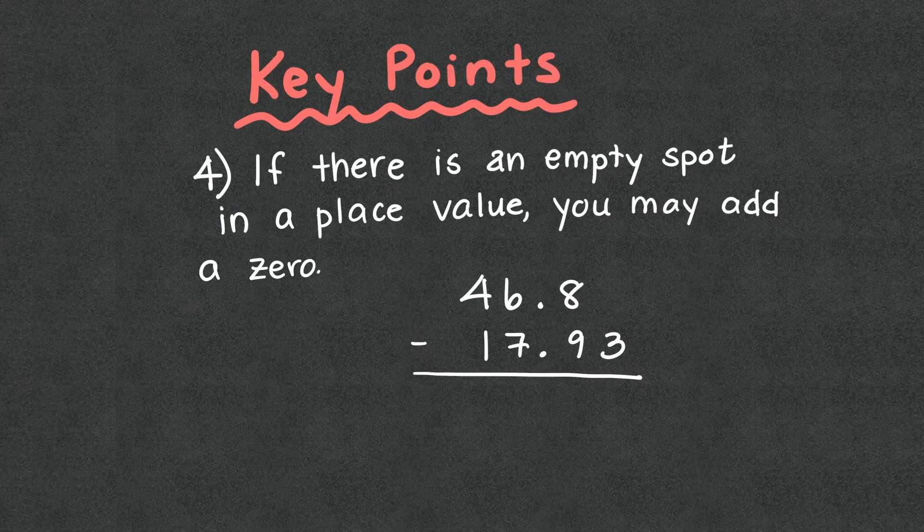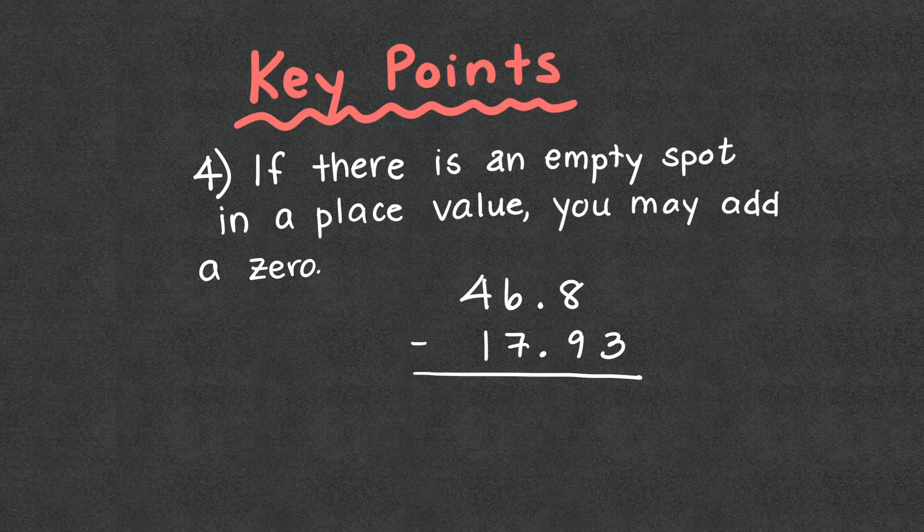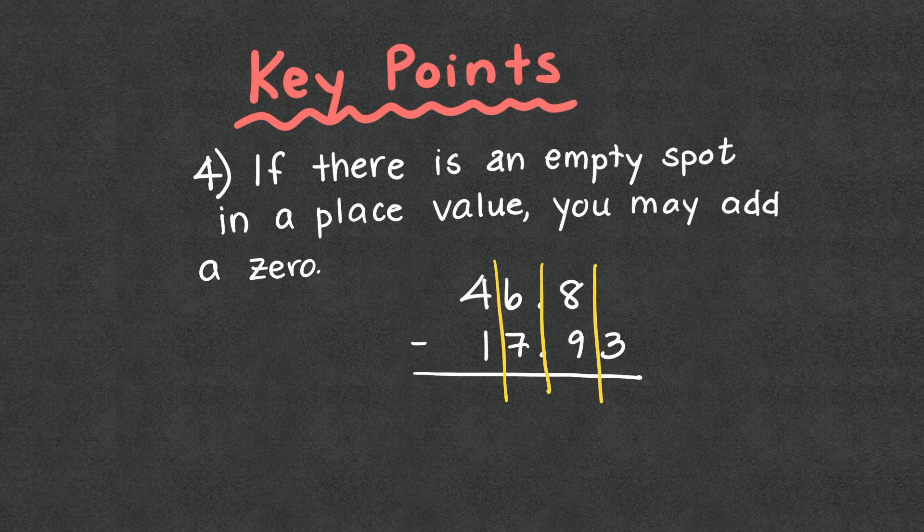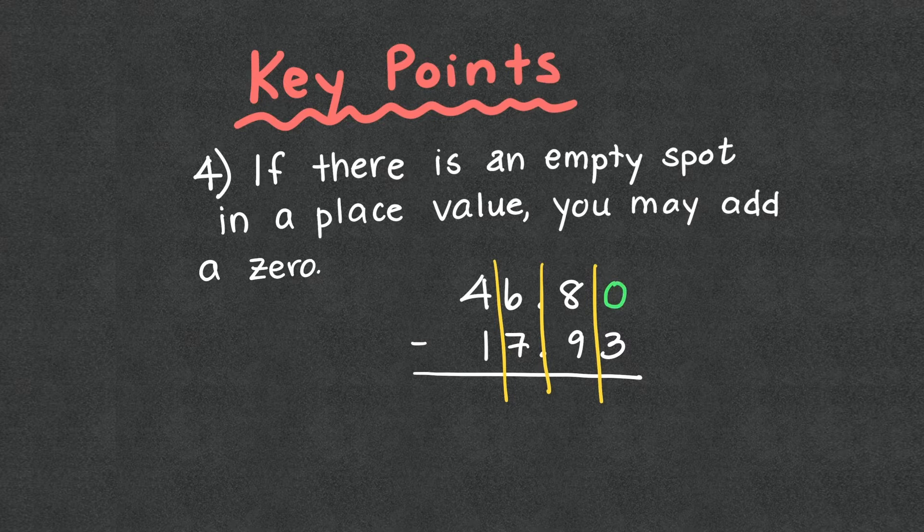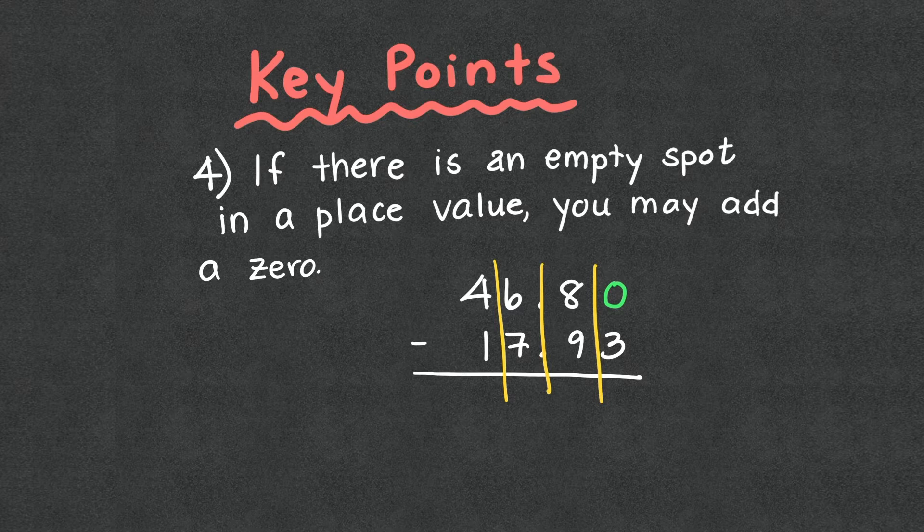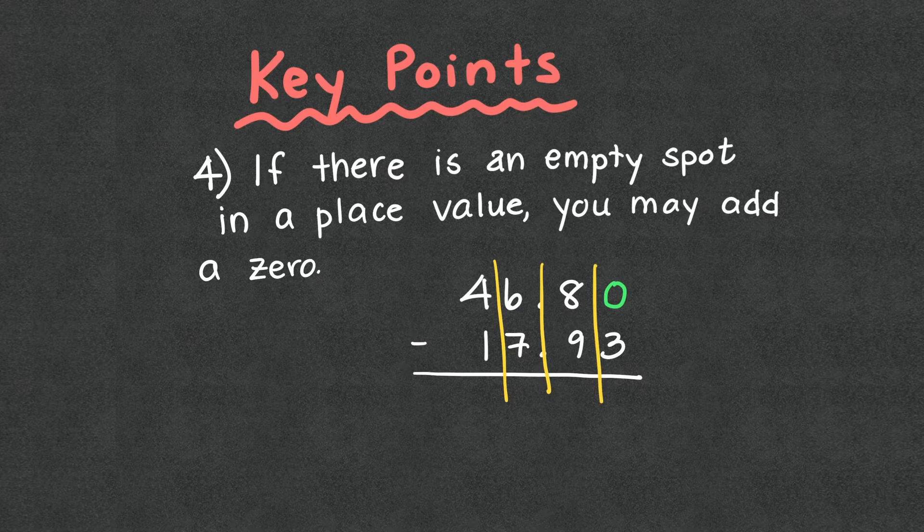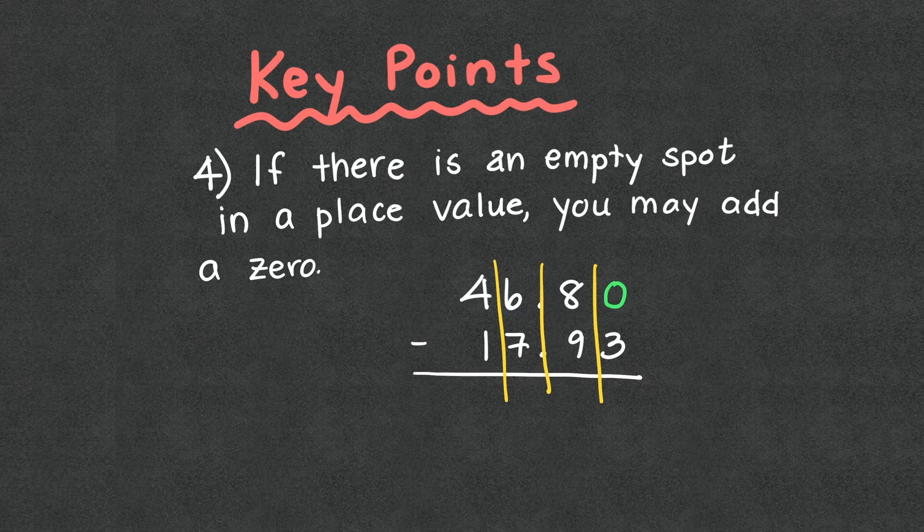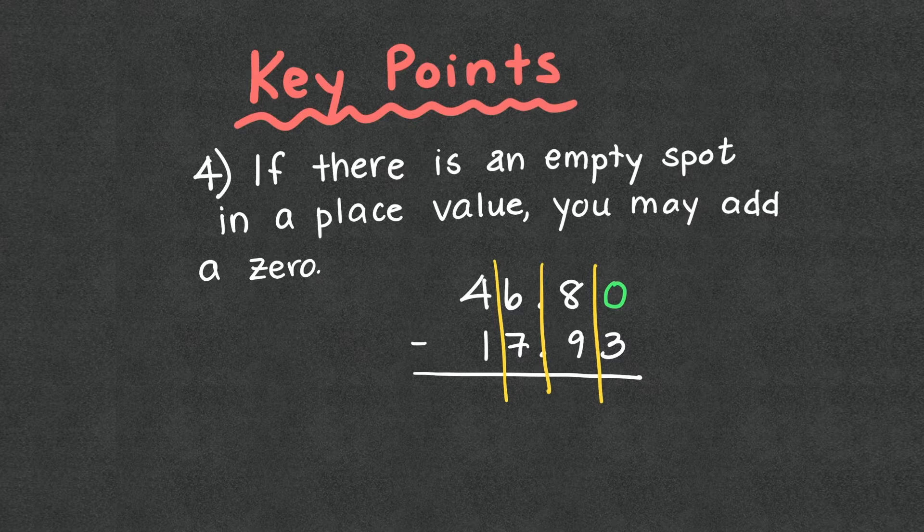Four, if there is an empty spot in a place value, you may add a zero. So what that means is if we look at our place values, our decimal points lined up, we can see that right here above the 3, there's a blank space. I can add a zero here without changing the value. Do you have to do this? No. But oftentimes with subtraction, we make mistakes. We forget there's a zero and we bring down the number below to the bottom of our answer. So make sure that if it helps you to put a zero in there, do it. And then you would add or subtract like normal. That zero again does not change the value of the number.